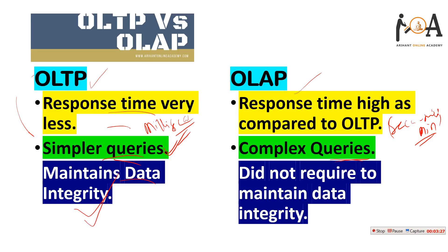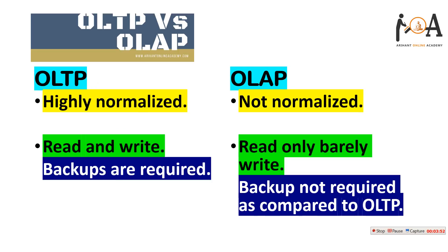OLTP maintains data integrity because updation is needed — we insert, delete, and update data, so data integrity must be maintained. But in OLAP there is no such need to maintain data integrity because modification work is not done there; we are only working on a query method.